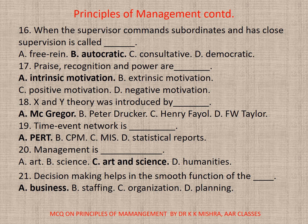Question 18: X and Y theory was introduced by — correct option is MacGregor. Question 19: Time event network is — correct option is a) PERT.